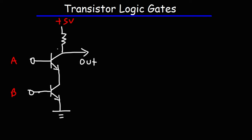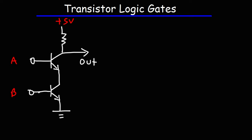Whenever you have two transistors in series with each other, you're dealing with either an AND or a NAND gate. When they're parallel to each other, you're dealing with an OR or a NOR gate. So, is this AND or NAND? Let's build a table and then we'll talk about it.